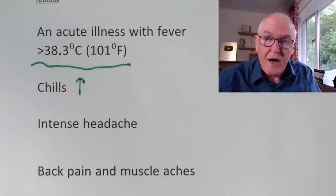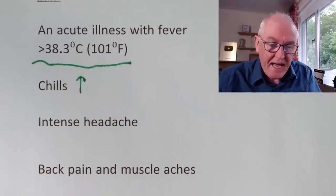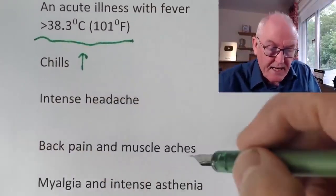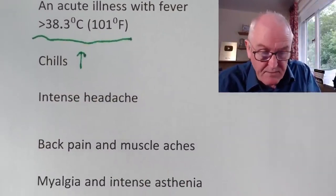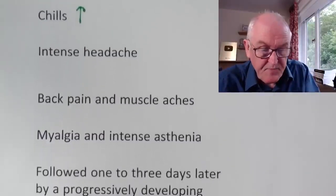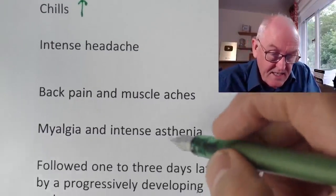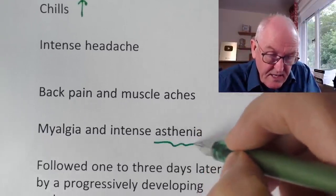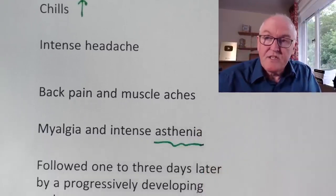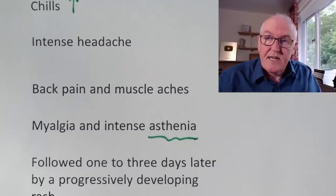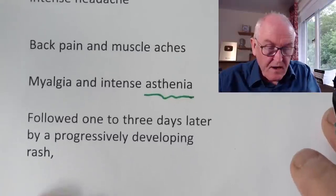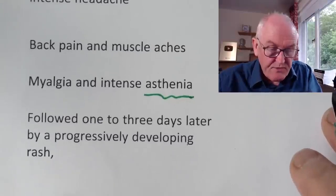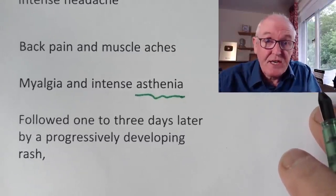Usually there's quite a bad headache. There's muscle pain and muscle aches — back pain, myalgia — and also asthenia, which means weakness. There is a general weakness and tiredness, followed by one to three days later the progressive development of a rash.